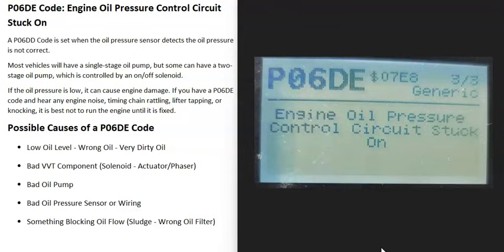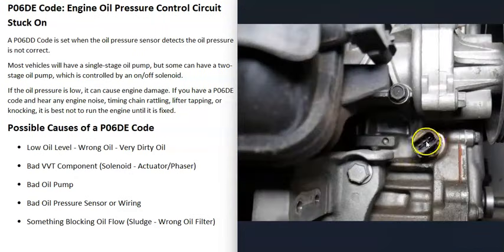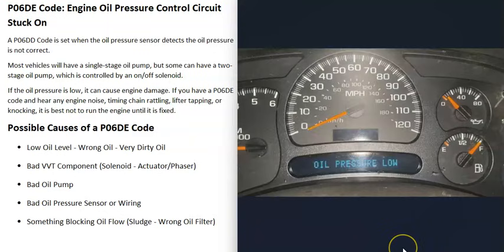Today I'm talking about a P060E code — what it is and how you could go about fixing it. A P060E code is an engine oil pressure control circuit stuck on. Basically, engines have an oil pressure sensor reporting to the computer what the engine oil pressure is. When you get this code, the sensor is reporting that the oil pressure is not correct — either too high or too low, outside the range it's supposed to be.